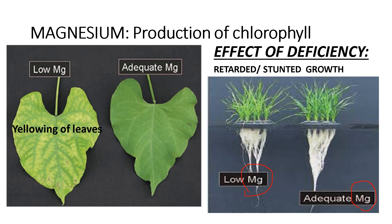Now look at this picture. One leaf has less magnesium and the other has adequate magnesium. The leaf with less magnesium is yellowish in color, whereas the leaf with adequate Mg is green in color. So, deficiency of magnesium results in yellowing of leaves.